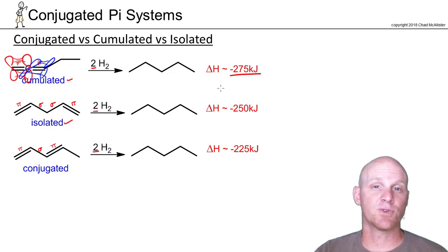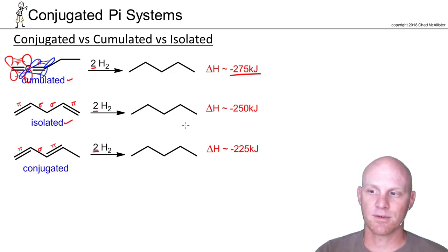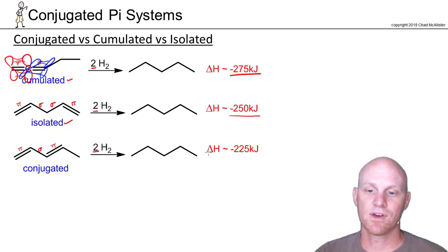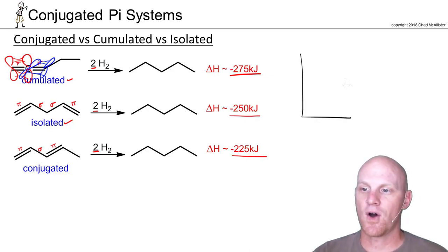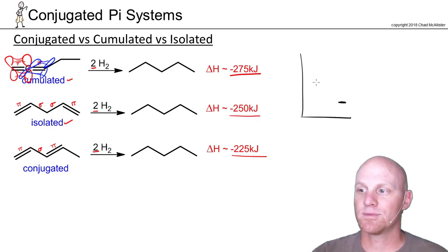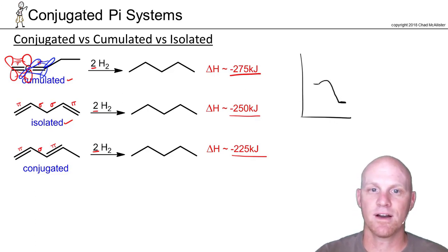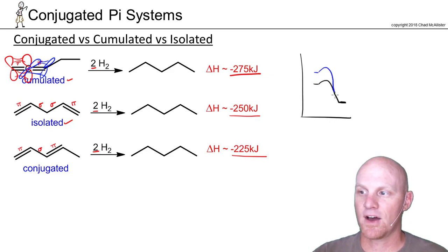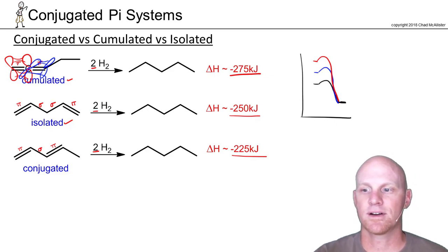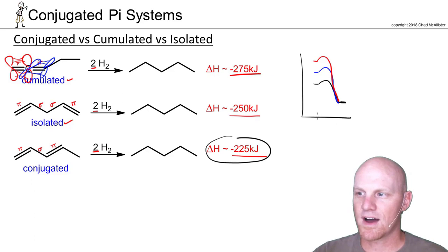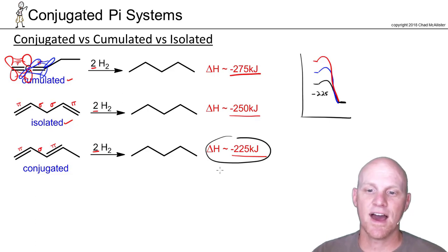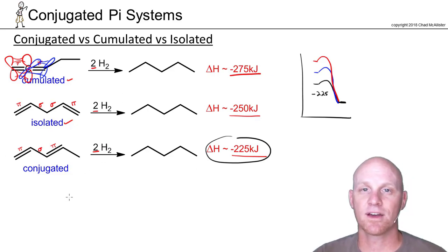We expect you to know that a heat of hydrogenation is always exothermic. For the isolated system, the heat of hydrogenation is 250 kilojoules, and for the conjugated system it's only 225 kilojoules. They all end up at the same place — they all turn into pentane — but they have different reactants. The lower heat of hydrogenation is evidence that this conjugated system is actually lower in energy, and that's the focus of this chapter.